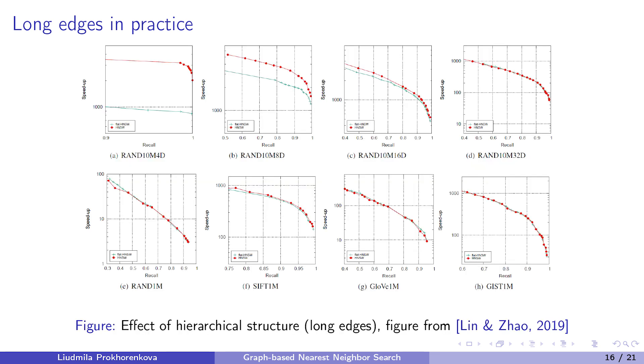However, as I already mentioned, the effect of long edges is important only if the dataset is sufficiently dense. This agrees with the recent empirical paper showing that the original hierarchical HNSW outperforms the bottom layer of this graph called flat HNSW on the figure only on dense datasets. Long edges help only on synthetic datasets of small dimension. On real datasets, there is no significant difference between these versions.